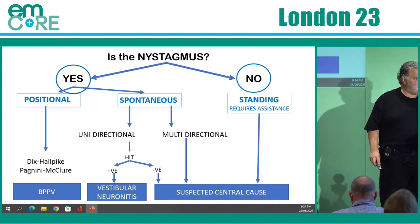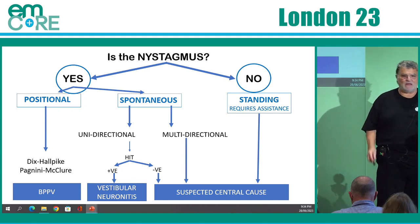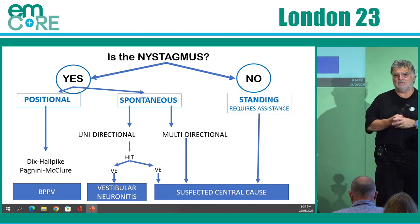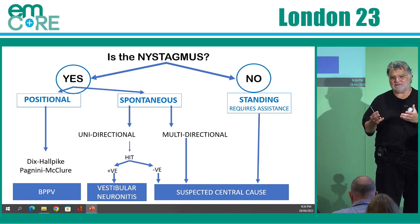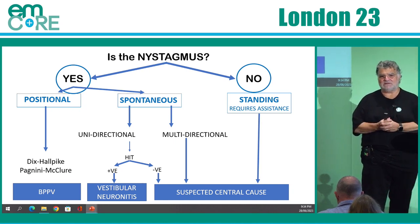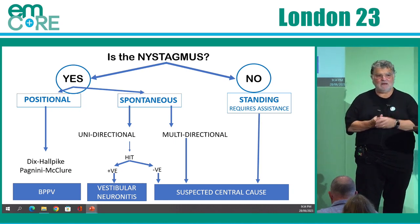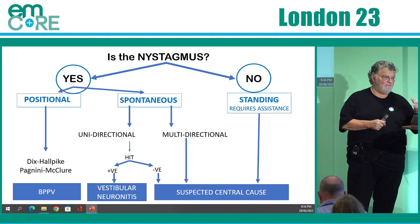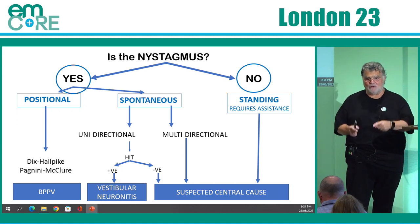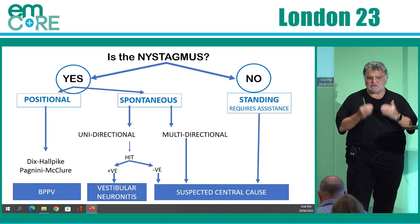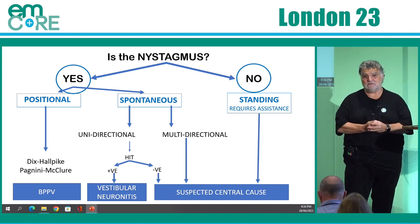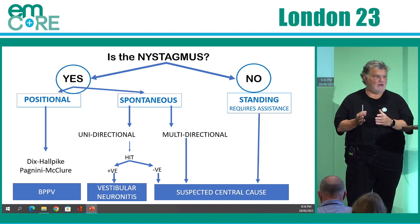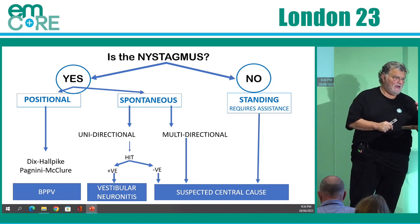If you don't have nystagmus, you stand them. You test their gait and look at what their truncal ataxia is. If you have vertigo and no nystagmus, it's a central cause until proven otherwise — you've got to go down that road.